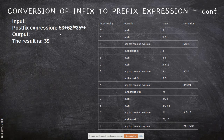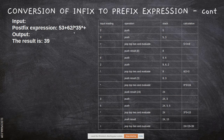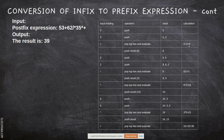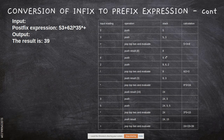Now we will see another example with this postfix expression. When we come across an operand, we push it. So we push 5, then push 3. Now the stack has 5 at the bottom and 3 on top. Next we come across +, which is an operator, so we pop these two elements and perform the operation: 5 + 3 = 8. The result 8 is pushed back into the stack.